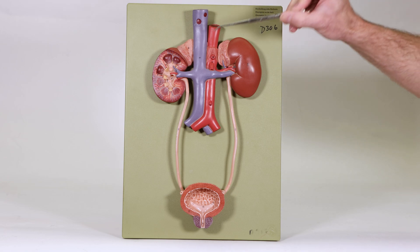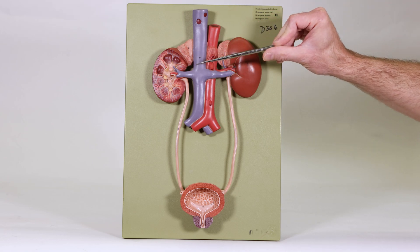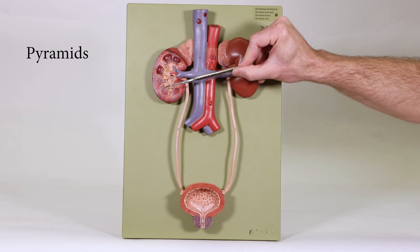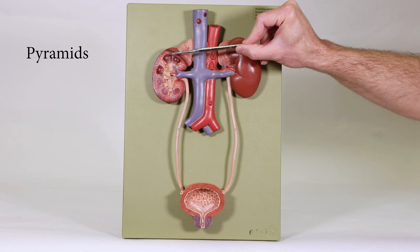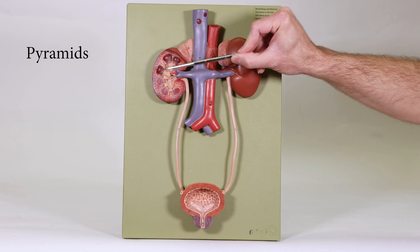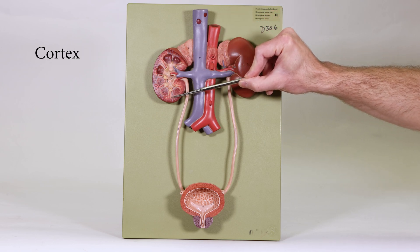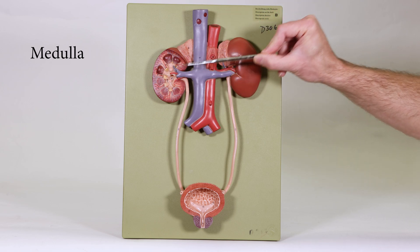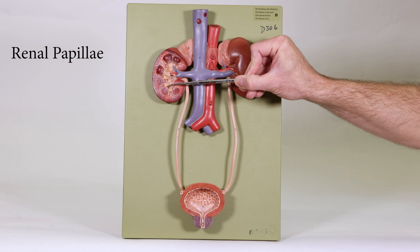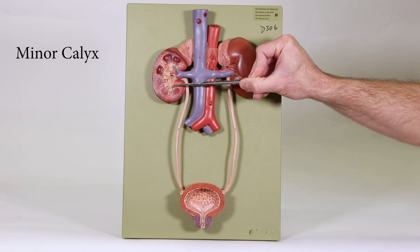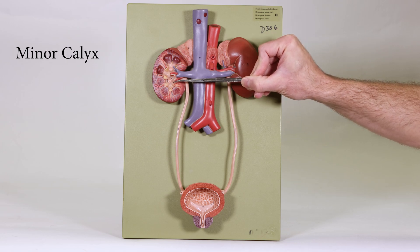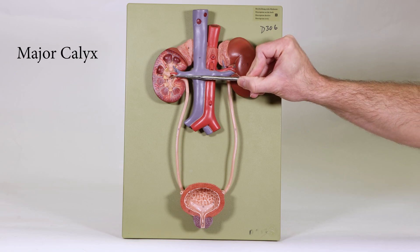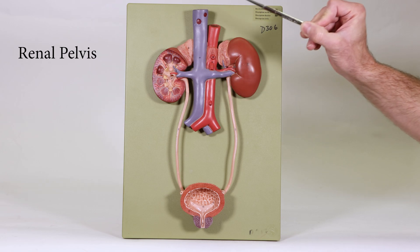You can also notice up in the kidney, the pyramids are visible in this model. The cortex is outside, the medulla is inside. You can look at the papillae a little bit — the minor calyx feeding to major calyx, going into the renal pelvis.